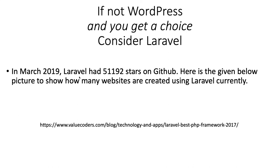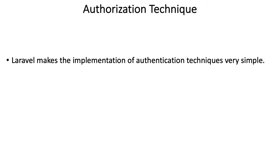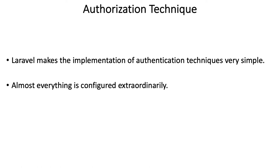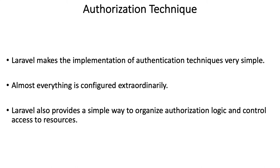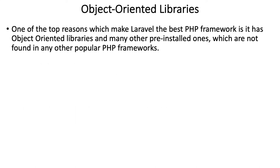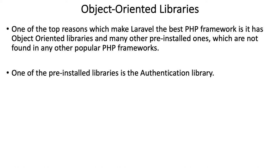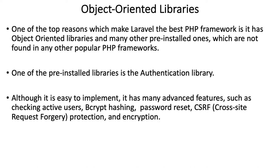In March 2019, Laravel had 51,192 stars on GitHub, which is where it's distributed from — that's a lot of positive reviews. Laravel's authorization techniques make for simple implementation. It uses object-oriented libraries, and one of the top reasons Laravel is considered the best PHP framework is those libraries. One of the pre-installed libraries is the authentication library, which is easy to implement yet has many advanced features such as checking active users, bcrypt hashing, password reset, cross-site request forgery protection, and encryption.